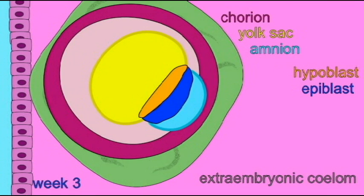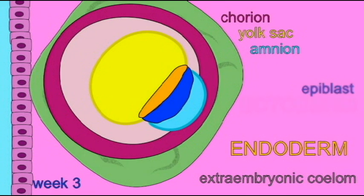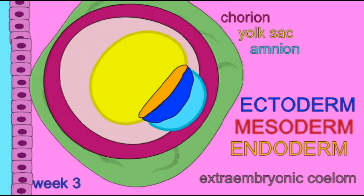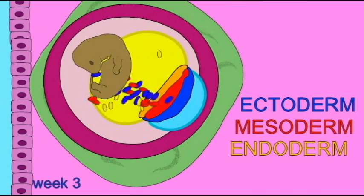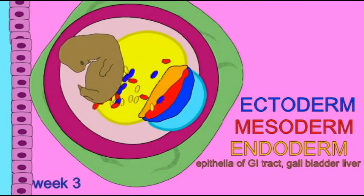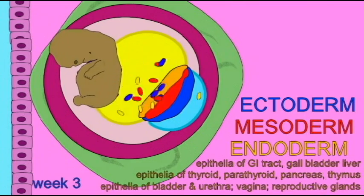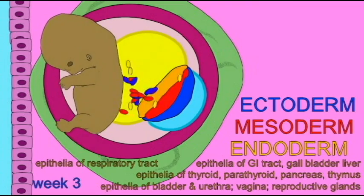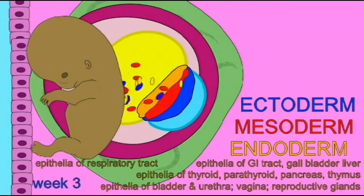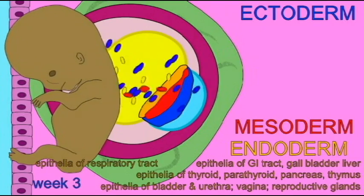Early in embryonic development, tissues known as ectoderm, mesoderm, and endoderm develop, and each of these tissues makes unique, specific contributions to the future individual. If cells in one of these tissues possessed an abnormal number of chromosomes, a specific gene mutation, or whatever, then the effects would be different than if this change occurred in a different tissue layer.